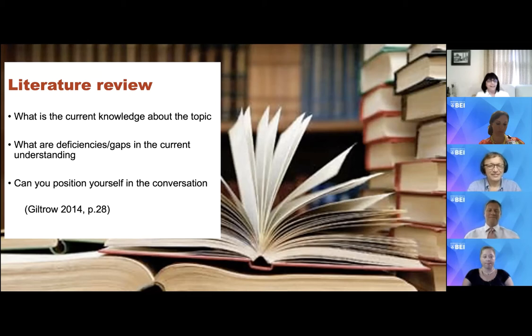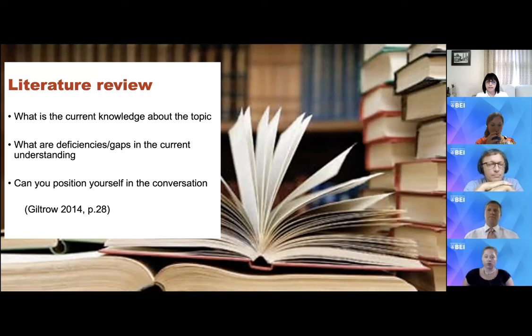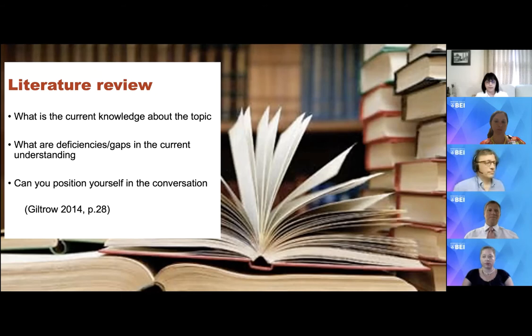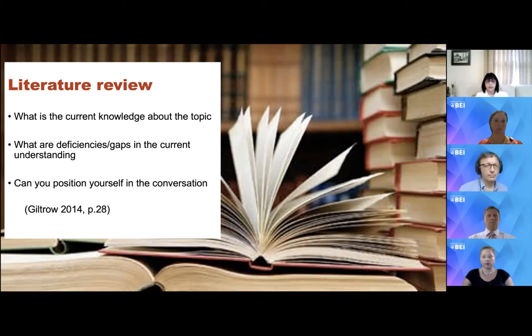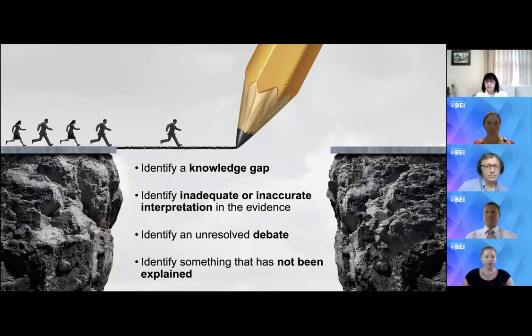As soon as we define the problem, the next step is the literature review. Think of the literature review globally and philosophically: what have other authors studied, what is the current knowledge about the topic, are there gaps or deficiencies in the current understanding? It's not just 'nobody's ever done this before' — perhaps people have reported this but there isn't sufficient explanation and the topic can be explored in even greater depth. That is how we position ourselves in the scholarly conversation.